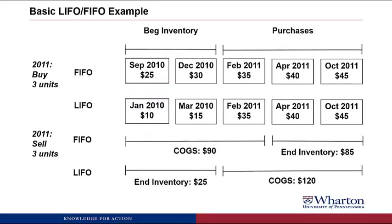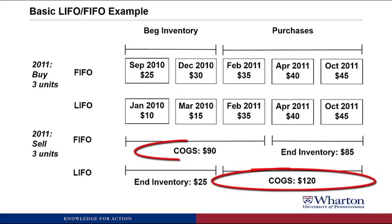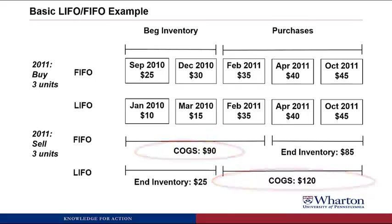Comparing the two: COGS under LIFO is $120, which is $30 higher than COGS under FIFO of $90. What's happening is that prices are rising through this example, and anytime prices rise, FIFO gives you lower Cost of Goods Sold than LIFO because LIFO is grabbing the newest, higher costs as part of COGS, whereas FIFO is grabbing the older, lower costs.